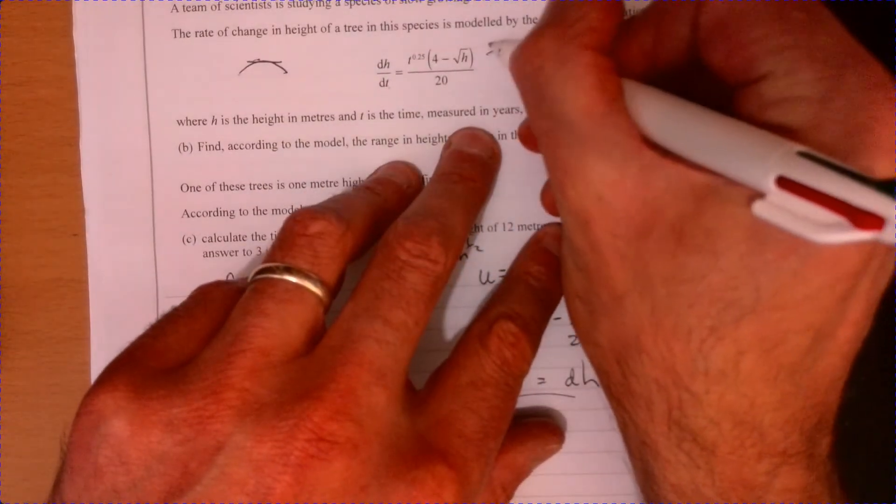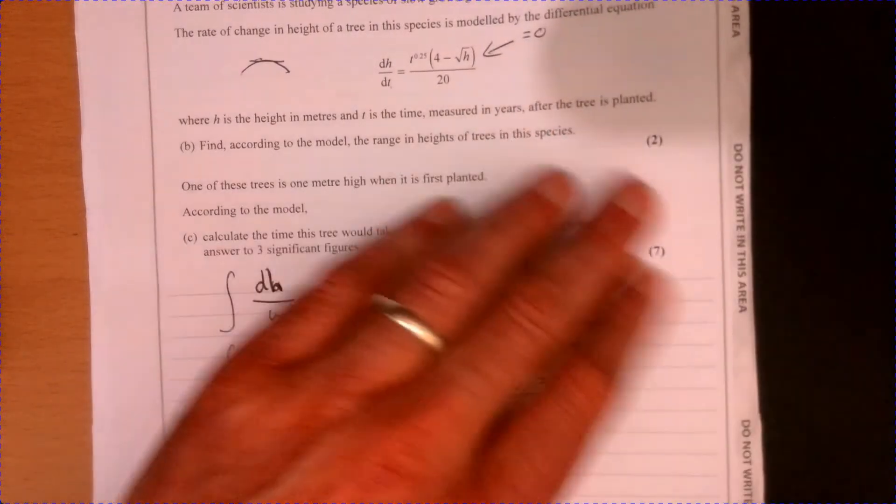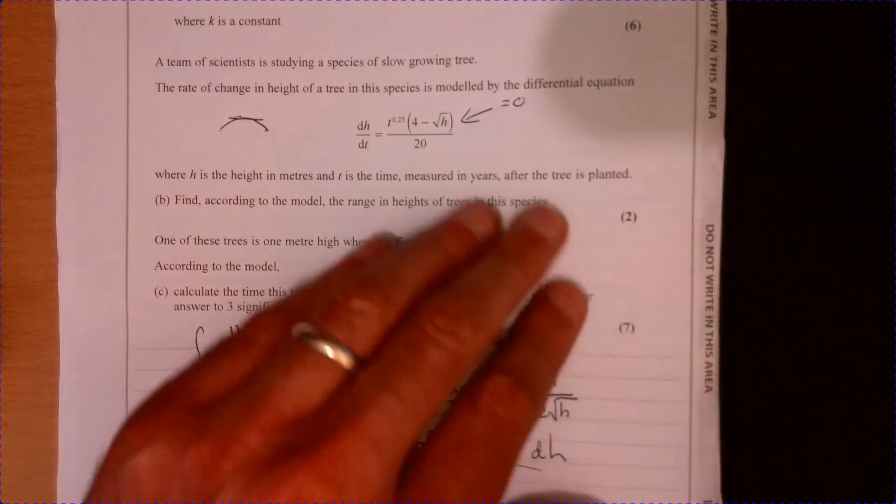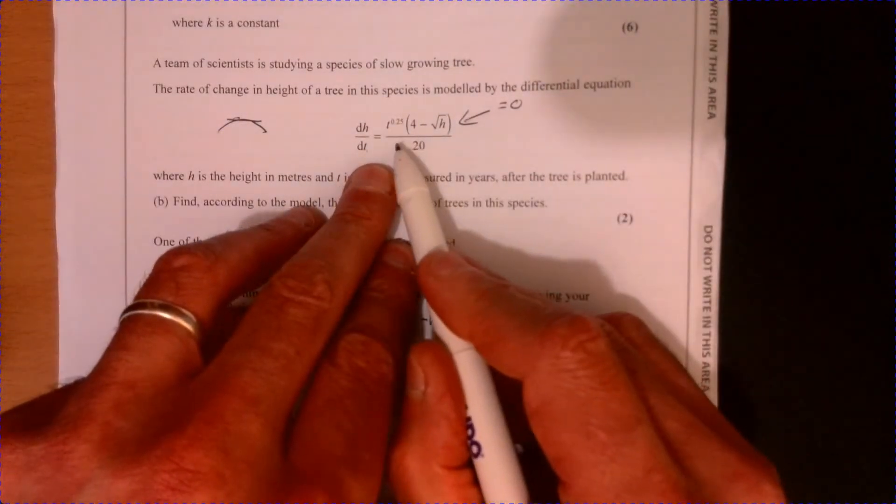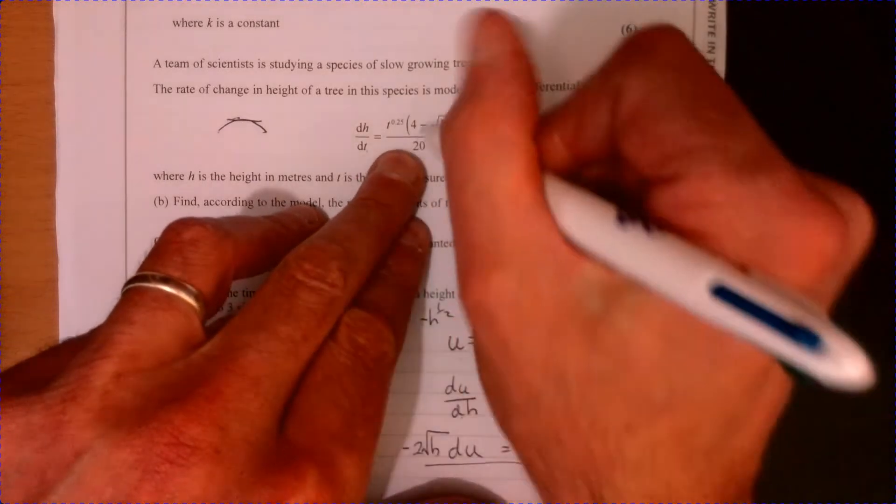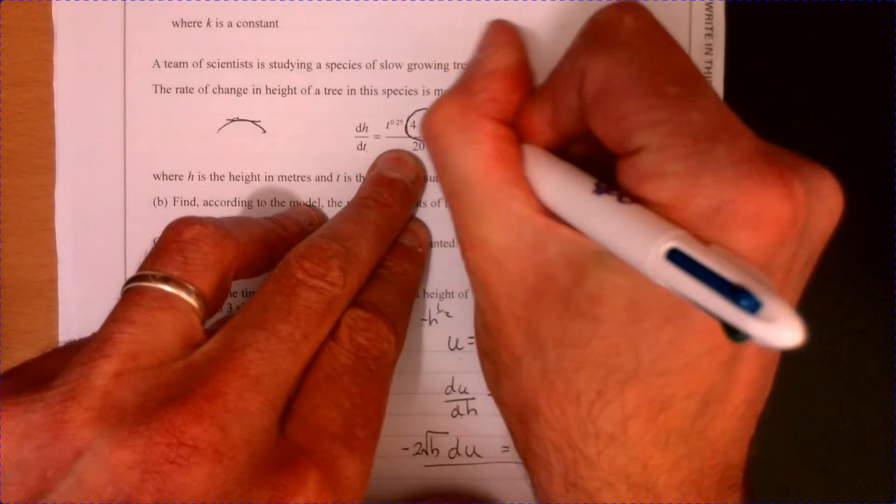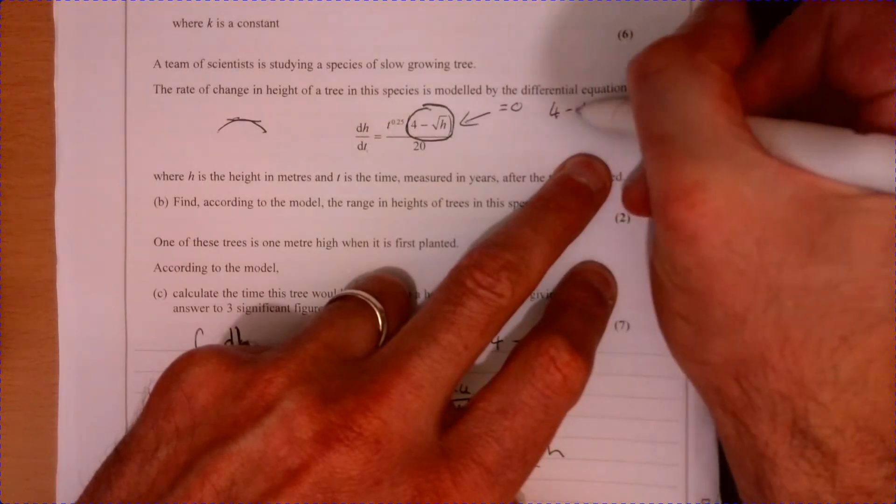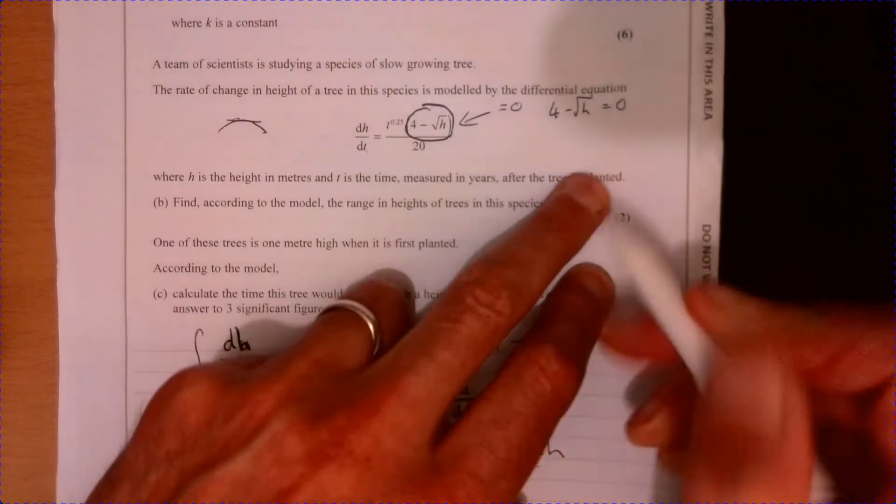In other words, when is this equal to 0? And that's going to give me my maximum height. So when's it going to be equal to 0? Well, obviously I'm not too worried about this bit. It's this bit here I'm really interested in. So it's when is 4 minus root h equal to 0?